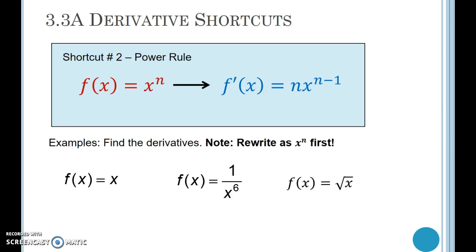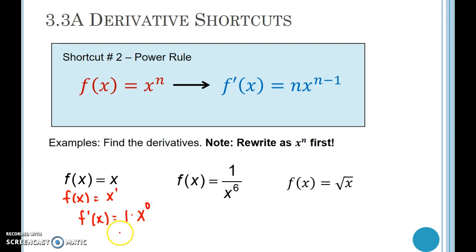The second shortcut is the power rule, and it's really quite powerful. It says that if you have x to an exponent, then the derivative is the exponent times x raised to a power reduced by 1. The key is to make sure your function is written in the form x to the m before you use the shortcut. For example, the derivative of x is x to the 1st power, so it's 1 times x to the 0, which is just 1 — which also makes sense as the slope of the line y = x.